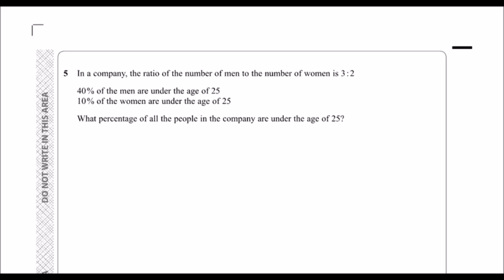Okay, in a company the ratio of men to women is 3 to 2. So we've got men and we've got women. 40% of the men are under 25, 10% of the women are under 25, what percentage of the total is under 25?